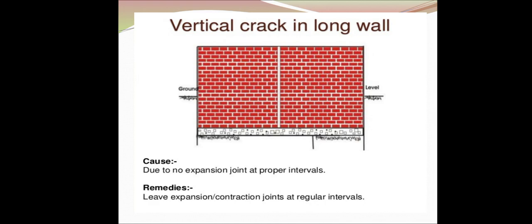Vertical cracks in long walls are caused by the absence of expansion joints at proper intervals. The remedy is to leave expansion or construction joints at regular intervals.